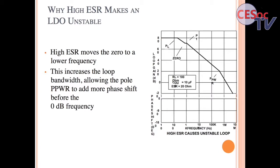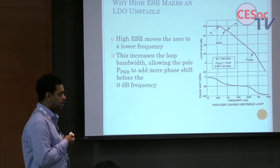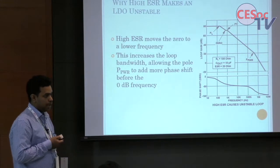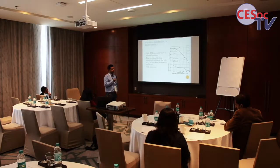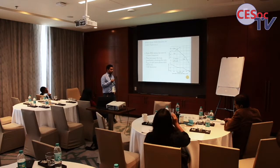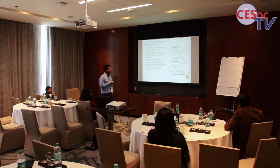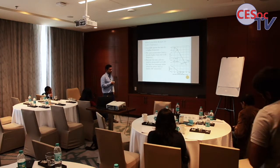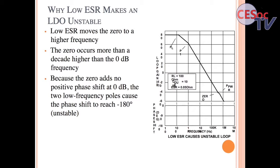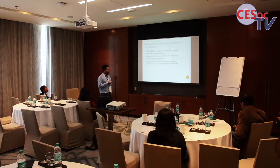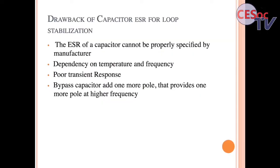If ESR is very high, the zero shifts toward lower frequency, increasing bandwidth. The high-frequency bypass capacitor pole then moves above 0 dB, causing 180 degree phase shift and oscillation at that frequency. If ESR is very low, the zero falls below 0 dB and oscillation occurs at some hundred-kilohertz frequency at the 0 dB crossing. So the system needs to be stable independent of ESR and capacitor value.